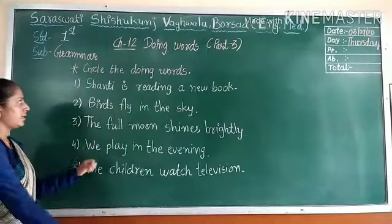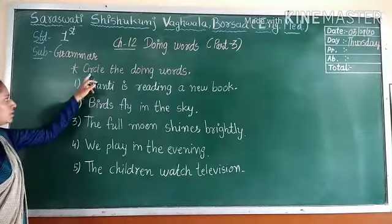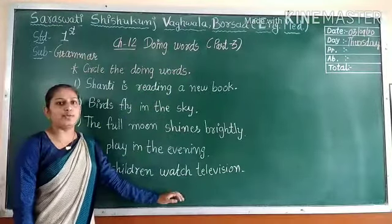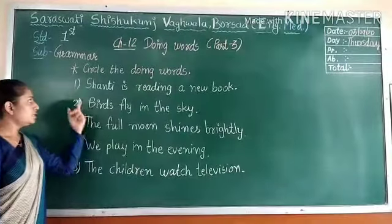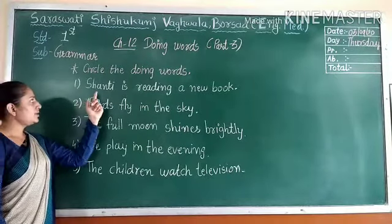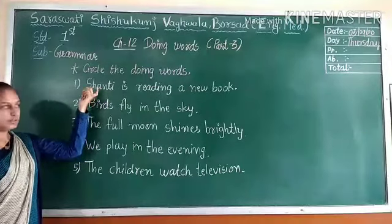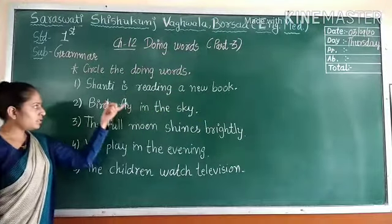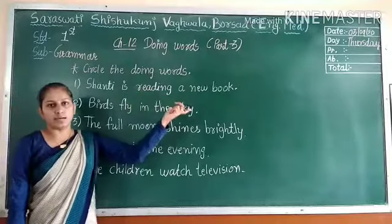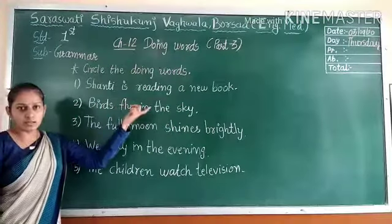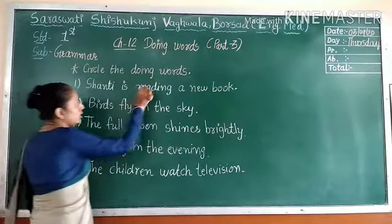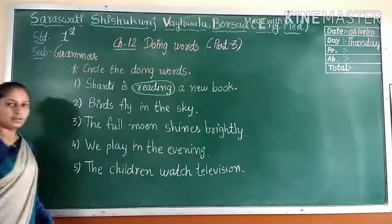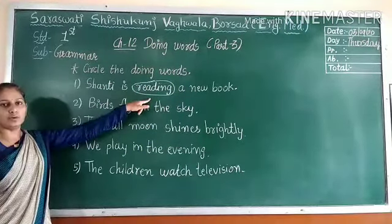Now let's see the exercise. Here sentences are given and you have to find out the doing words. First one: Shanti is reading a new book. In this sentence, what is Shanti doing? Reading. Right, so reading is the doing word. You have to circle the word reading.